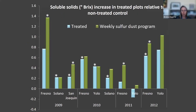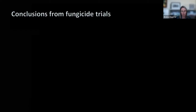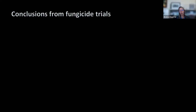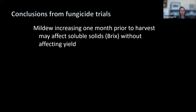This chart summarizes the impacts on soluble solids, or Brix, in harvested fruit. The vertical axis shows the difference in degrees Brix between treated and non-treated plots. In almost every trial, fungicide programs increased soluble solids. In some cases the increase was fairly dramatic — up to 1.4 Brix difference — and averaging across all ten trials, the advantage from controlling mildew was about half a degree Brix.